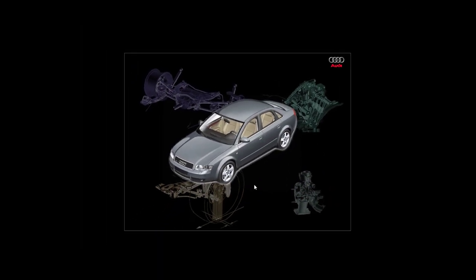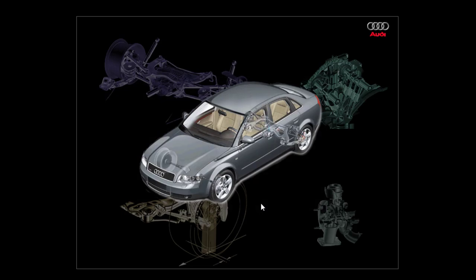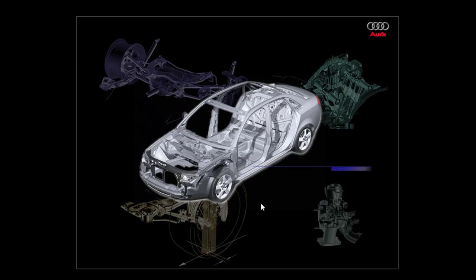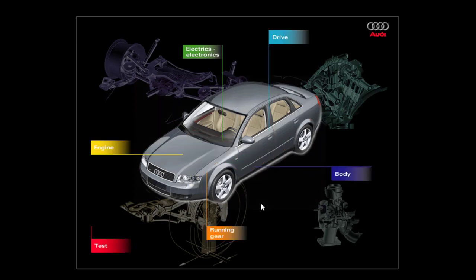A vehicle is a complex construction, comprised of five function groups and modules. The engine converts the chemical energy provided by the fuel into mechanical energy for the drive. The drive transfers the engine torque onto the driven axle. The running gear ensures that the vehicle adheres to the road and dampens shocks. The body supports and bears the vehicle, and the electrics and electronics control and regulate the entire system. A vehicle only functions perfectly if all of these modules are attuned to one another.